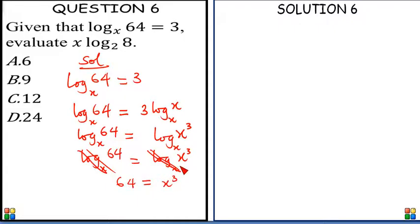64 can be expressed in index form. 64 is equal to 2 raised to power 6, or you write 64 as 4 raised to power 3. Anyone you wish to use. Let me choose to use 4 raised to power 3 in this case.